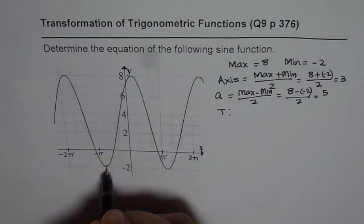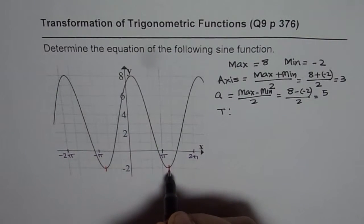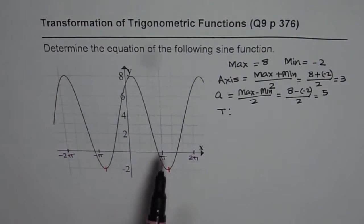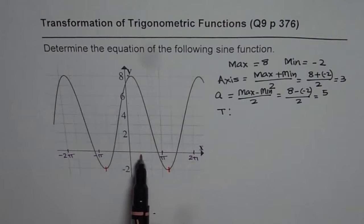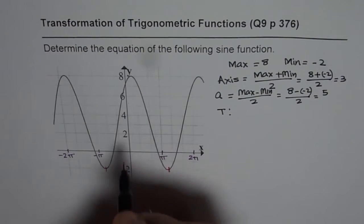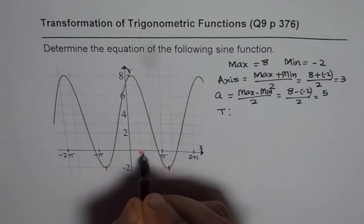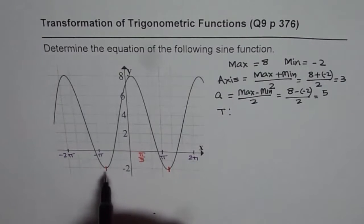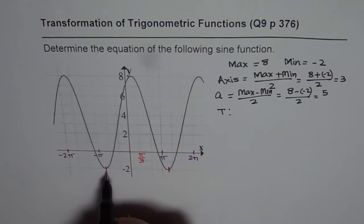So here we have a minimum. The other minimum is right there. Now we are given 1, 2, 3. That means 3 squares is π. So every square is π by 3. Now this happens to be right in the center. So we will say that this is like half of π by 3. So what we have here is π by 6.